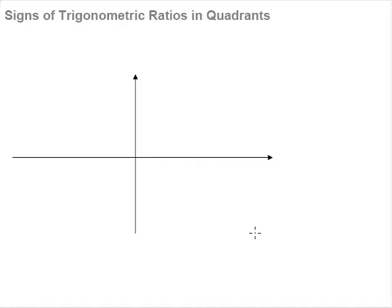Now that we know we can reduce a very large angle into an acute angle, let us take a look at how this affects our trigonometric ratios. The assumption here is that you are familiar with the three basic trigonometric ratios: sine, cosine, and tangent.